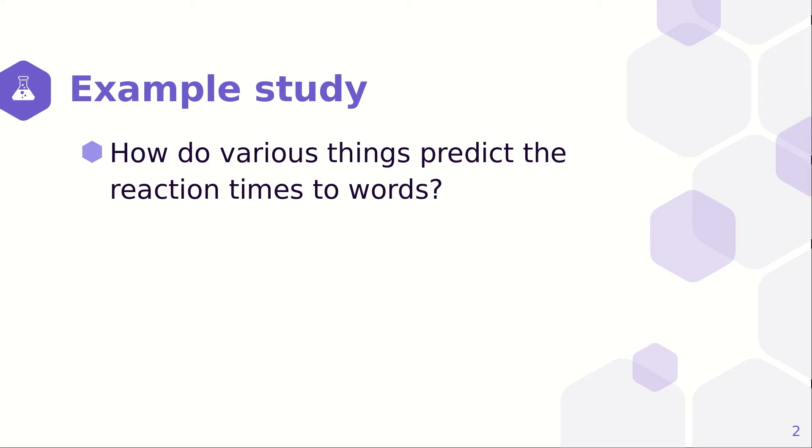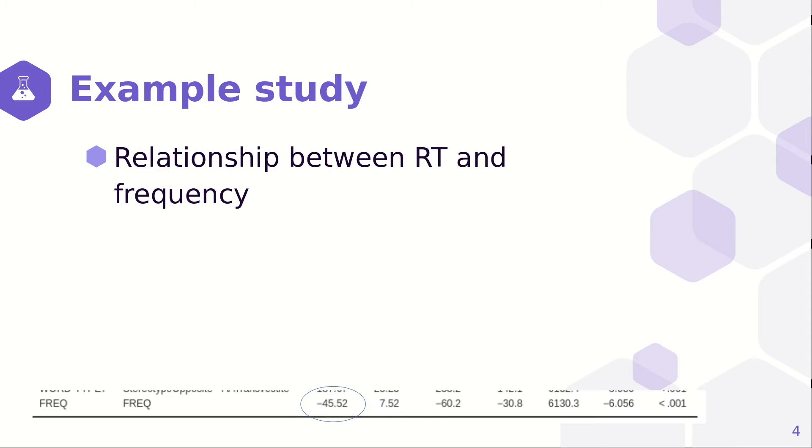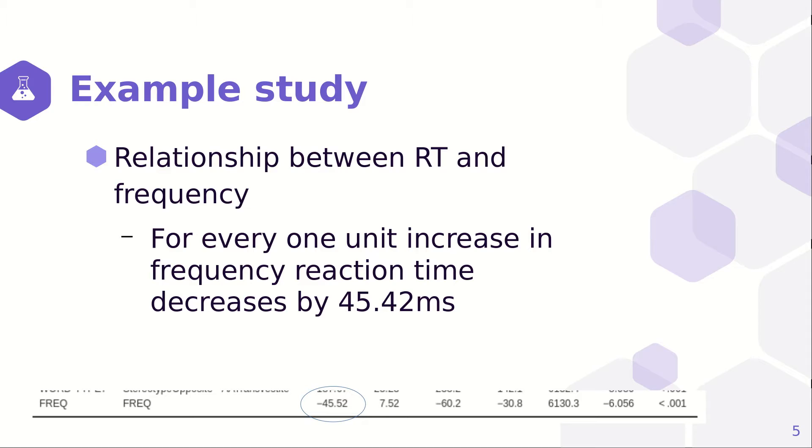In order to discuss it, let's look at an example study. It had to do with how various different independent variables predicted reaction time to words. For example, there are different types of words and there are words of different frequencies. Both of those independent variables were significant predictors of reaction time. Now the relationship between reaction time and word frequency was such that for every one unit increase in frequency, reaction time decreases by 45.42 milliseconds. That's pretty easy to comprehend.